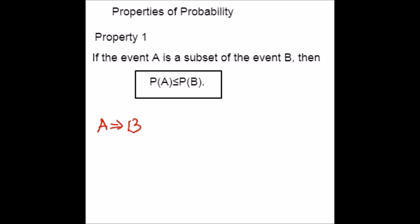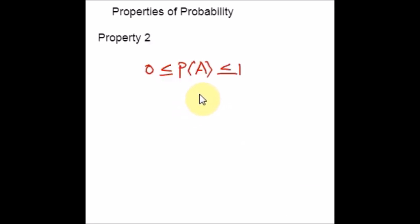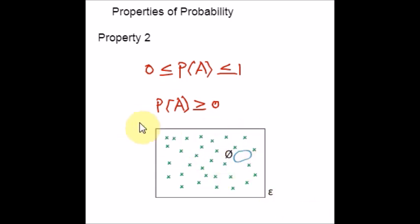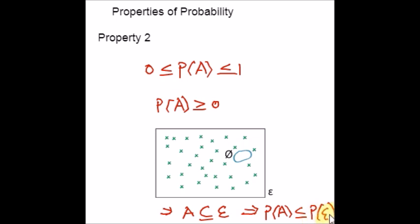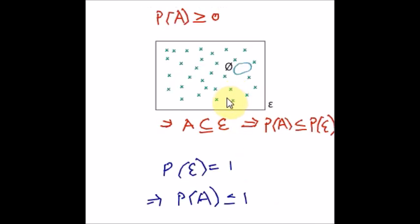Property number 2 says that 0 ≤ P(A) ≤ 1 for each event A. Axiom 1 already gives P(A) ≥ 0, so it is enough to prove the right side. Since A ⊆ Ω (the entire sample space), by property 1, P(A) ≤ P(Ω). By the second axiom, P(Ω) = 1. Therefore P(A) ≤ 1. This property formalizes the scale for probabilities given the axioms.